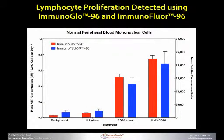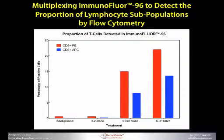Now let's take a look at a few results from these assays. Here you see a comparison between ImmunoGlo96 and ImmunoFlour96 when normal peripheral blood mononuclear cells are stimulated with either IL-2 alone, CD28 alone as a co-stimulator, or a combination of IL-2 and CD28. This diagram shows that ImmunoFlour96 can be multiplexed with flow cytometry to analyze the types of lymphocytes stimulated, looking at CD4 antibodies conjugated to PE and CD8 antibodies conjugated to APC.